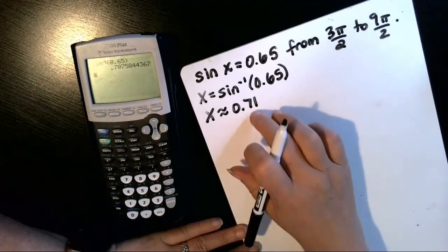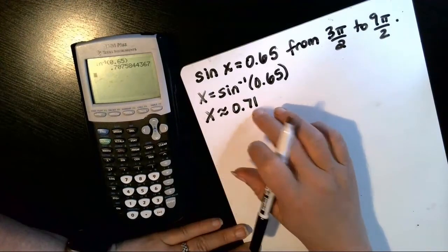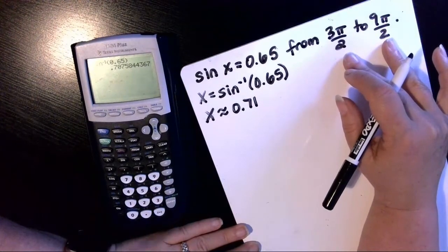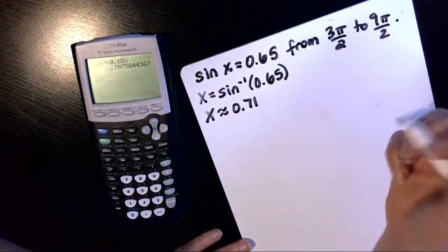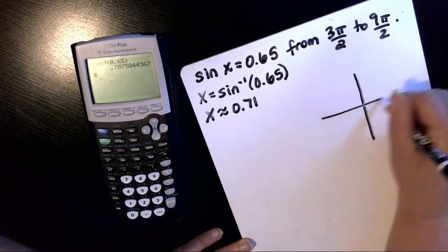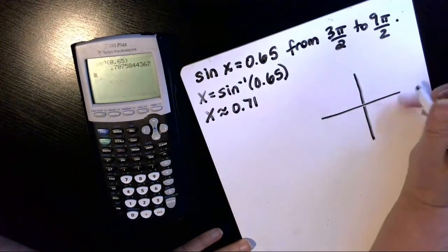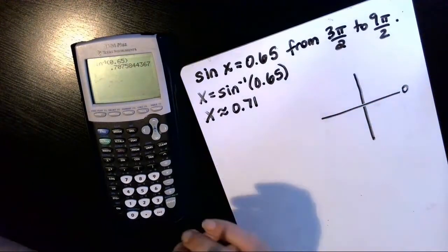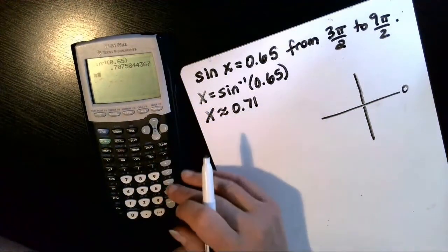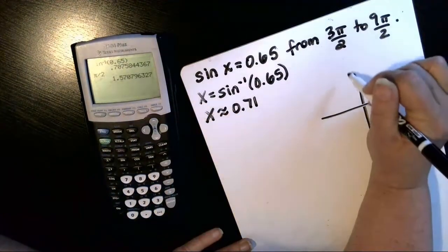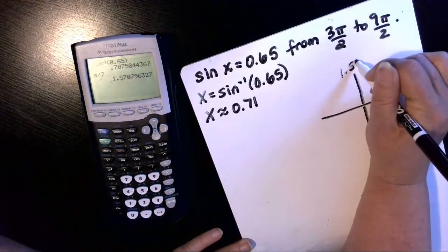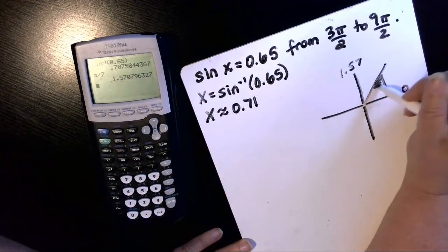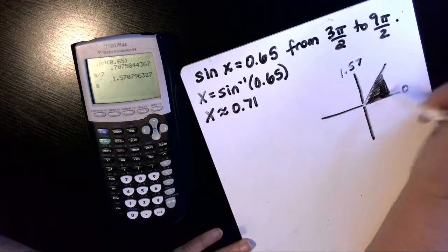And in order to figure out where this is on the circle, we'll need to know decimal approximations for our 3 pi over 2 and 9 pi over 2. We may as well just do all the quadrantals while we're at it. So starting here at 0, then a quarter of the way would be pi over 2. So pi over 2 is approximately 1.57. So this angle is in quadrant 1. So 0.71 would be this angle right here.